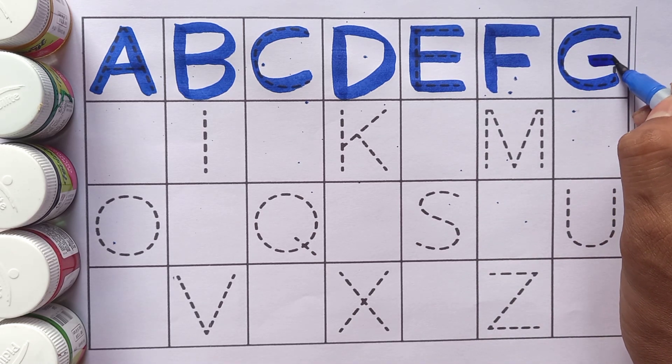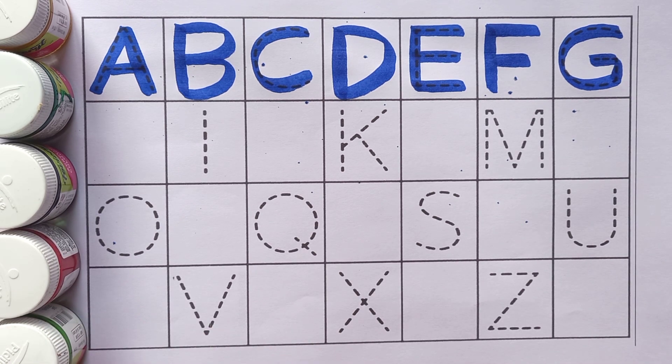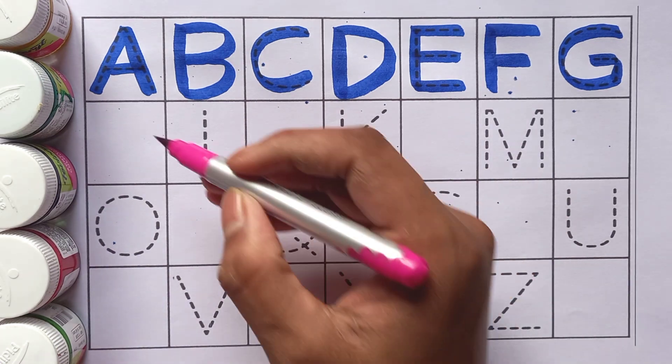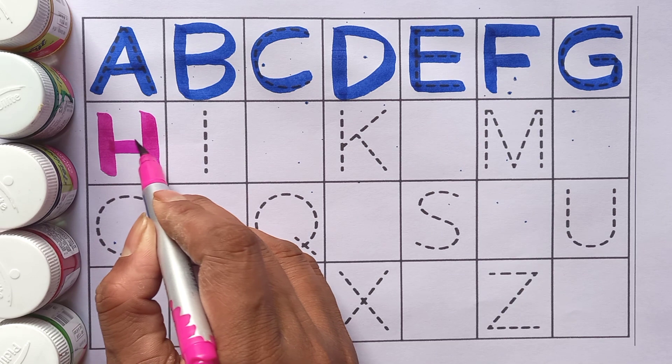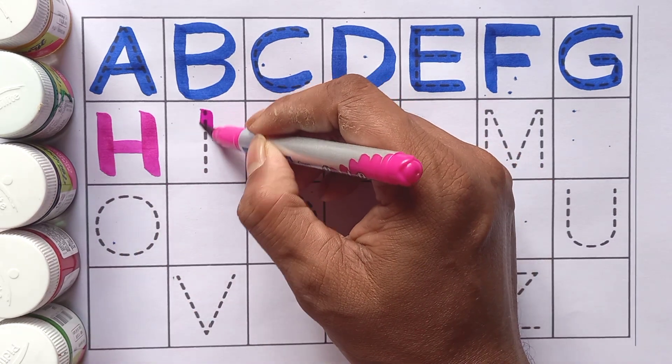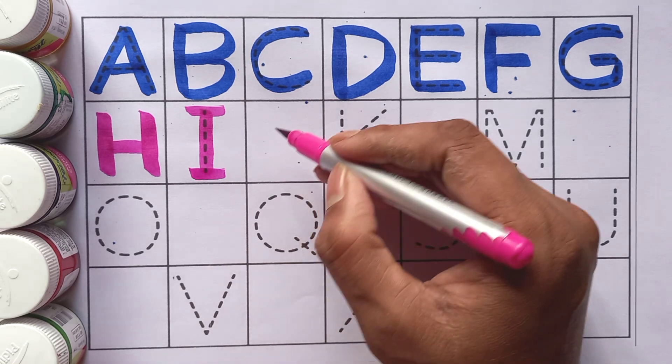G for goat. Pink color. H. H for hen. I. I for ice cream.